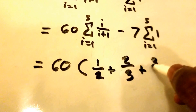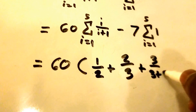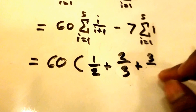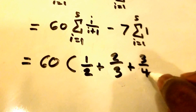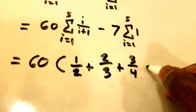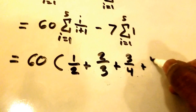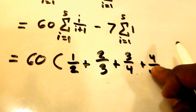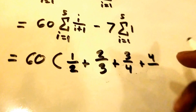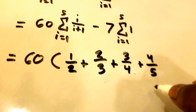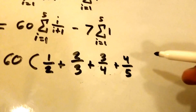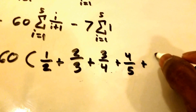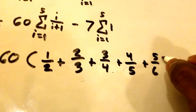Continuing, i increments to 3, giving us 3 divided by 3 plus 1, which is 3 fourths. Then i equals 4 gives us 4 divided by 4 plus 1, so that's 4 fifths. And then we have one more iteration — i equals 5 — giving us 5 divided by 6.